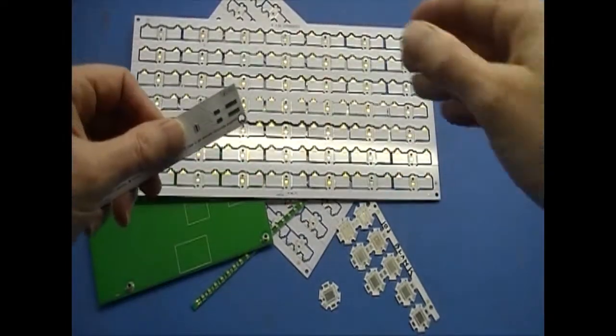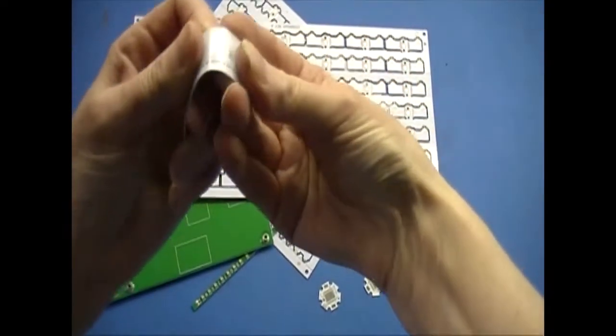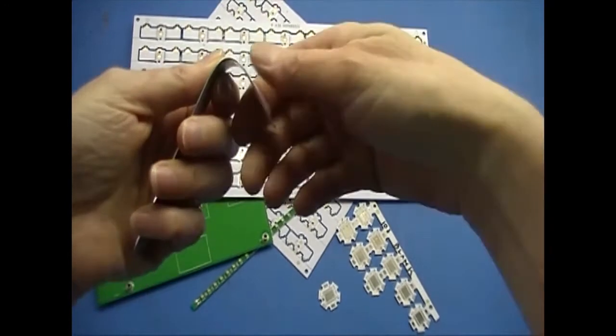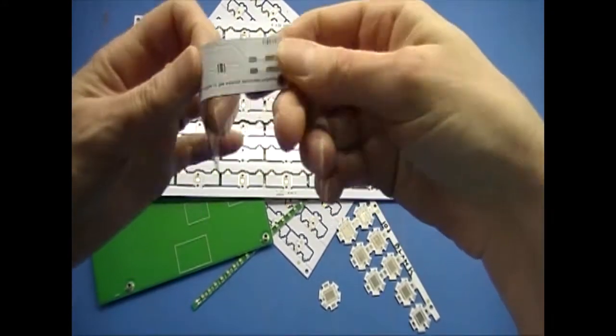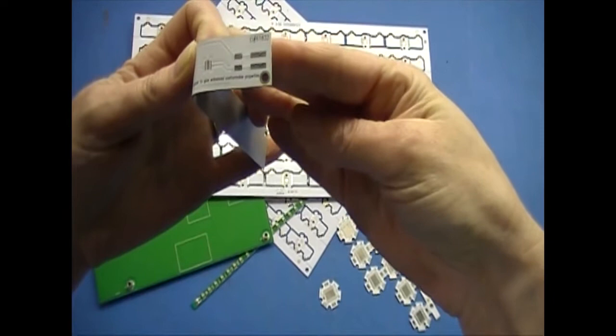And now, bendable metal clad boards. These boards let you bend the board to fit into small housings. These boards have a flexible polyamide for the dielectric layer instead of rigid FR4.